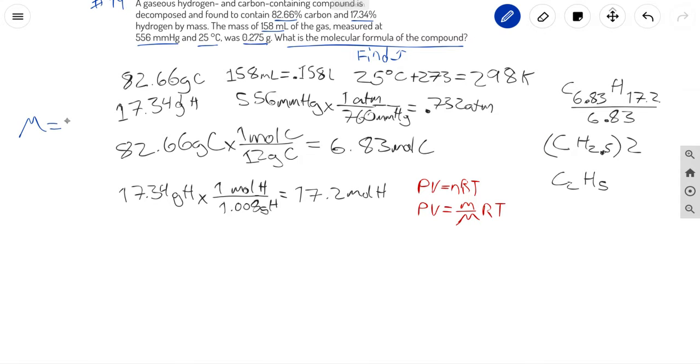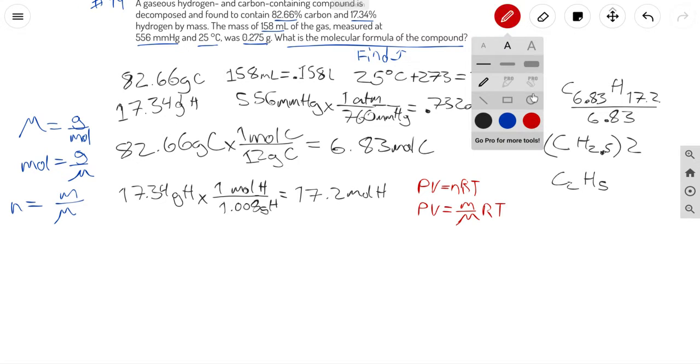So molar mass is equal to grams divided by moles. You just switch it. Moles is equal to n, grams is same thing as mass. Therefore you get n is equal to mass divided by molar mass. So I just substitute that, and we're solving for the molar mass specifically. So once again we're going to do algebra and then isolate the molar mass.